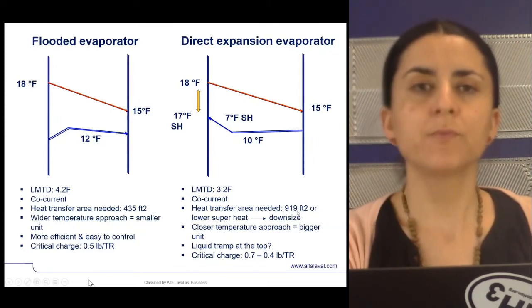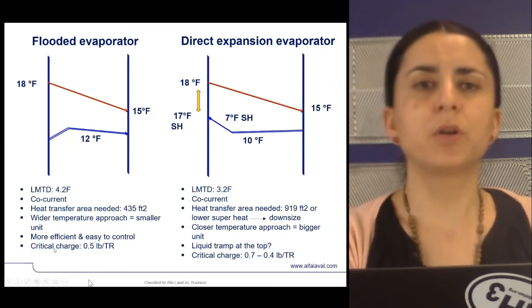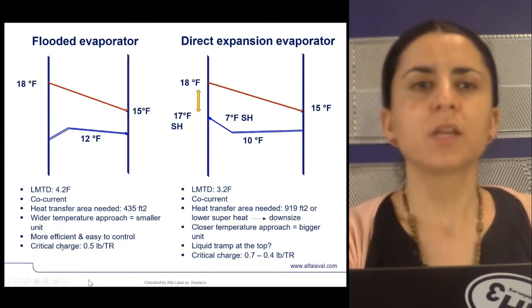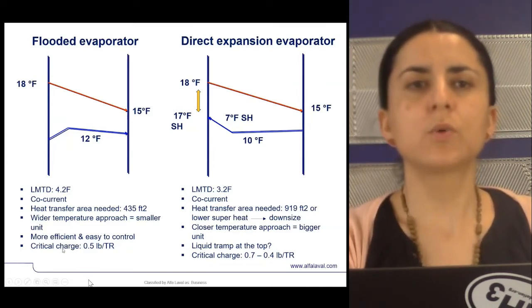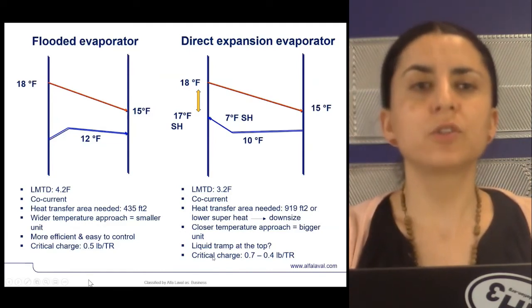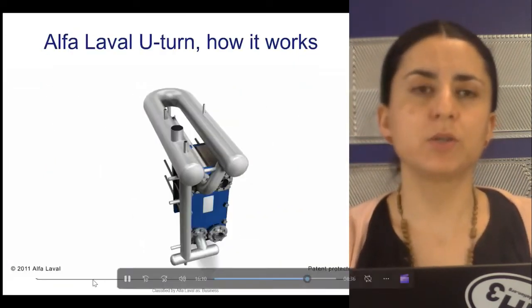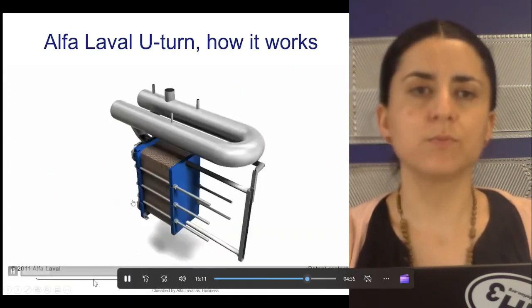However, you have to put a separator on top. An optimized separator can allow us to work efficiently at the highest possible suction and reduce the ammonia charge, which can end up being very close to a direct expansion application.